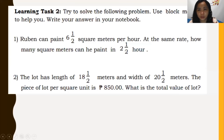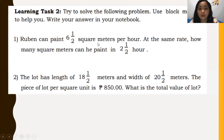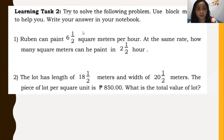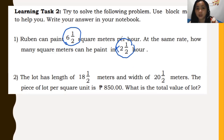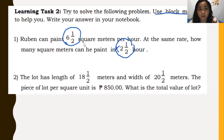Let's proceed to Learning Task Number 2. Try to solve the following problem using the block model approach. Number 1: Ruben can paint 6½ square meters per hour. At the same rate, how many square meters can he paint in 2½ hours? Since we are asked to use the block model approach, let's represent 6½ using columns, and multiply by 2½.